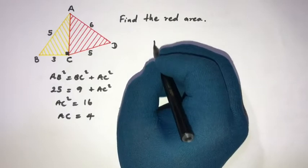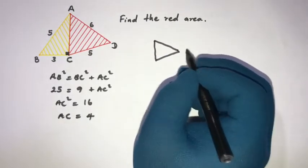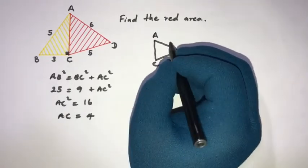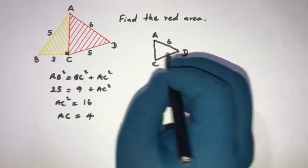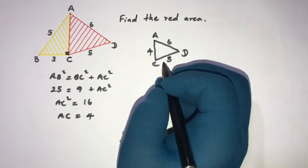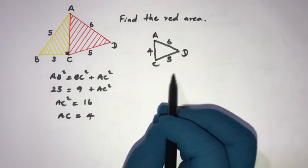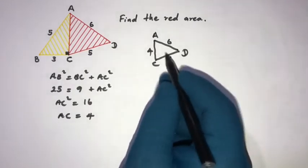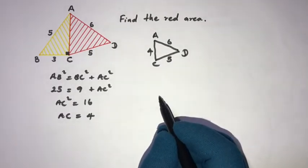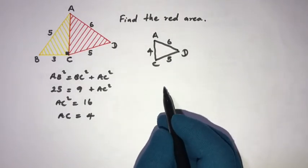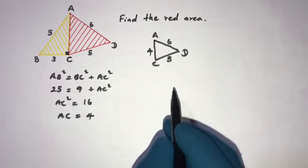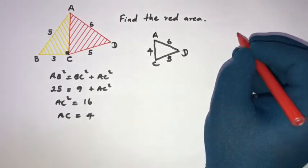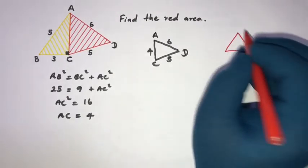Now we have triangle ACD with side lengths 6, 5, and 4. We know all three side lengths of this triangle. Now, how do we find this area? I think you know about Heron's formula.